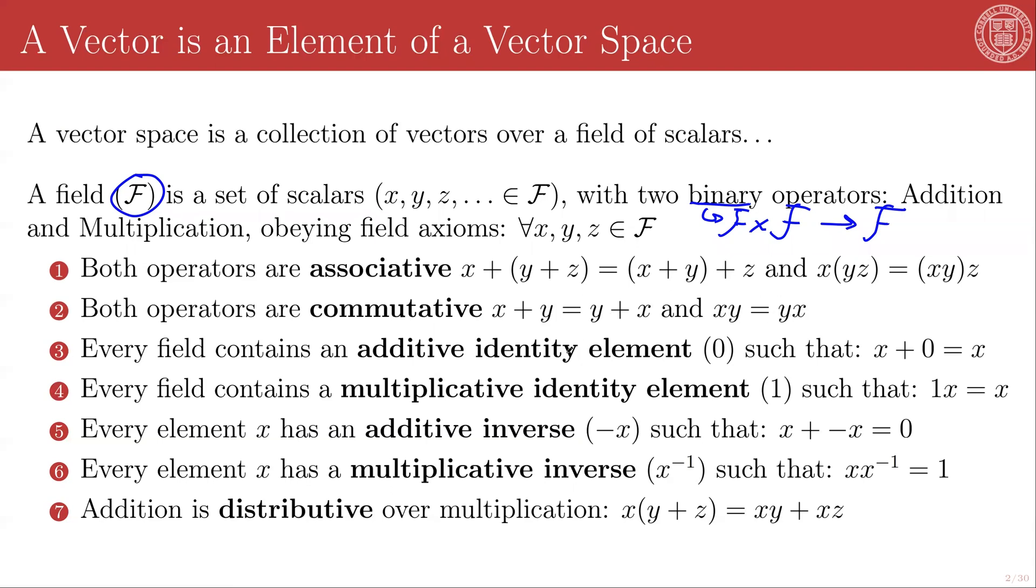Every field contains an additive identity element, 0. So this is a special element, such that any element of the field x plus the identity element 0 is going to be just x again. And every field contains a special multiplicative identity element, which we'll call 1, such that the product 1x for any field element x gives you back x. And so the existence of these two identity elements requires the existence of inverses, and therefore, every x has an additive inverse, which we'll call negative x, such that x plus negative x gives you the additive identity element, 0. And x also has a multiplicative inverse, such that x inverse times x gives you back 1, which is the multiplicative identity element.